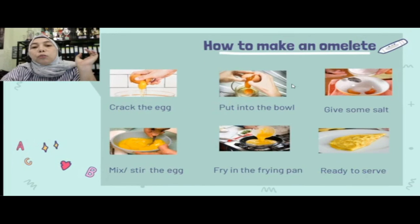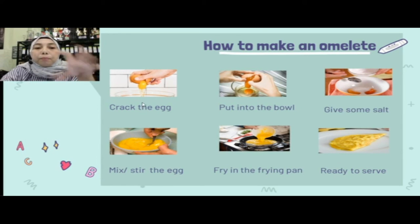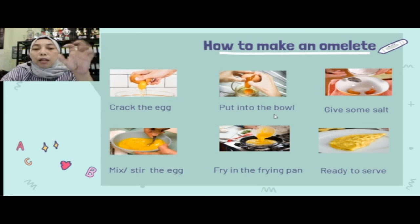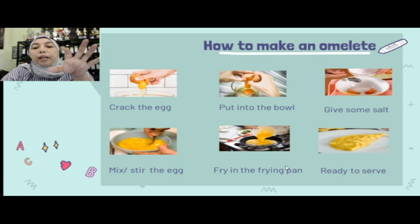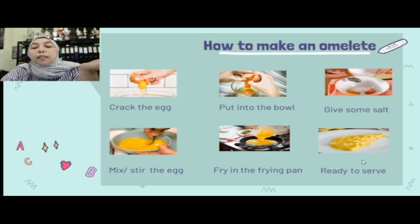Contoh kedua: how to make an omelette. First, crack the egg and put it into a bowl. Give some salt. Mix or stir the egg. Fry it in a frying pan. And then the omelette is ready to serve.